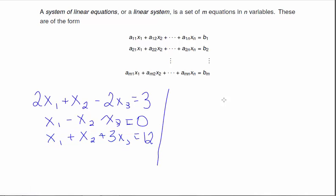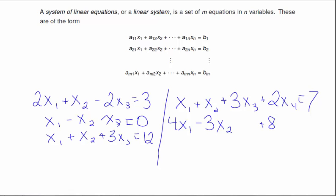Let's try another example: x₁ + x₂ + 3x₃ + 2x₄ = 7, and 4x₁ - 3x₂ + x₄ = 10. So this is also a linear system. My first one here is three equations and three variables. The second equation is two equations and four variables. So these can be all different sizes. They can have as many variables as we want, and they're still linear systems.